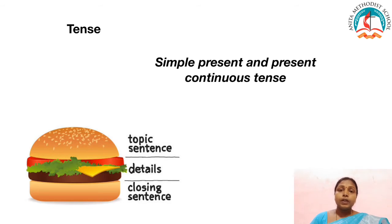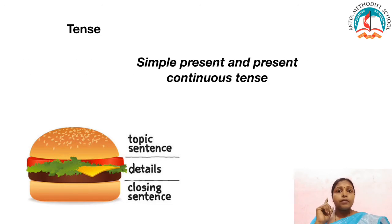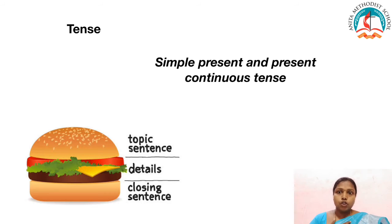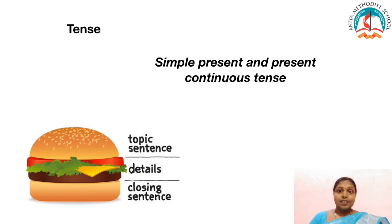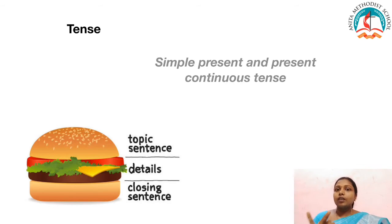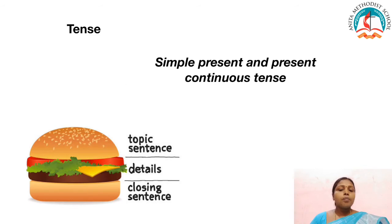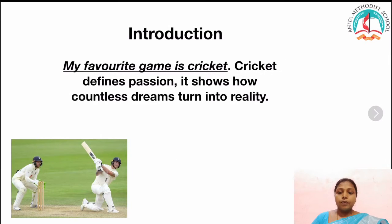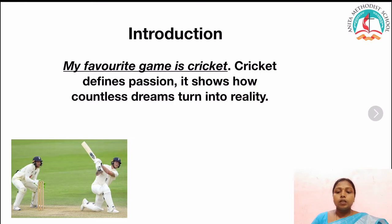Before I show you a model paragraph writing, I have a topic in my mind. My topic is my favorite game. I have prepared a paragraph. This paragraph is divided into three parts: introduction, body, and conclusion. Let's see how my introduction is for the topic 'my favorite game.' My favorite game is cricket. Cricket defines passion. It shows how countless dreams turn into reality. This is my introduction — I have given an introduction about the topic 'my favorite game.'